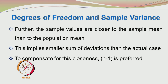If you look at the sample mean or the arithmetic mean, it is known that the sample mean is quite close to the sample values rather than to the population mean. Since you are calculating the arithmetic mean from the sample, the arithmetic mean is going to lie closer to the sample values than to the population mean. This would lead to smaller deviations and a smaller sum of deviations than the actual case. In order to compensate for this closeness, n-1 is preferred.